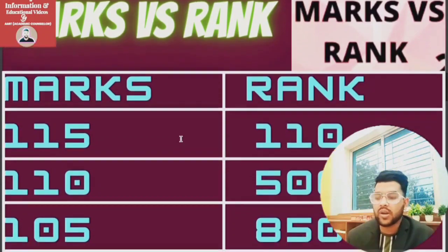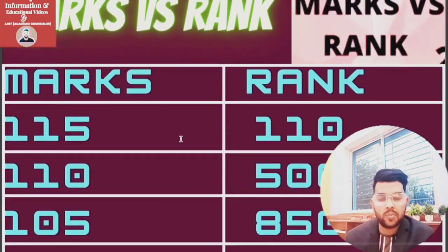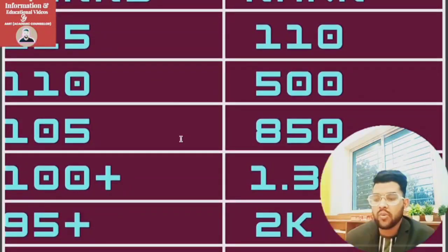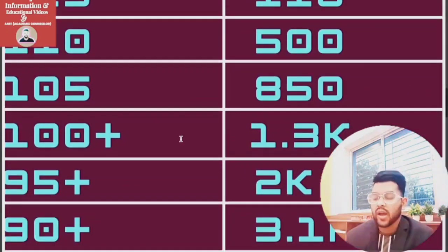For 105 marks, under 850 rank. For 110 plus, your rank will be under 1,300. For 95, it will be under 2,000, and for 90 plus, it will be around 3,100.